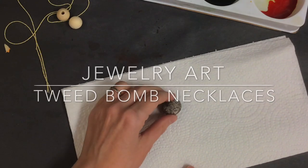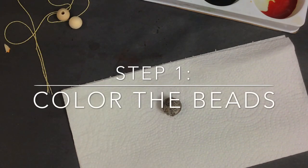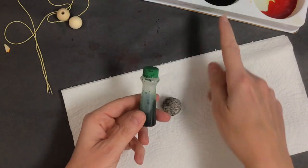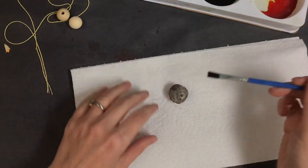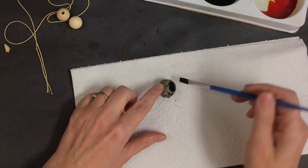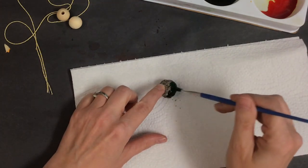Welcome back, artists. Today we are making seed bomb necklaces. Step number one is to color your seed bombs. For this activity, I did already make the seed bombs. If that's something you're interested in, you just need some dirt, compost, and seeds.